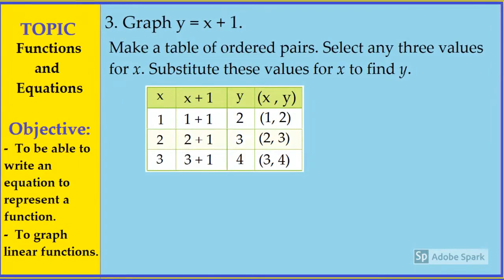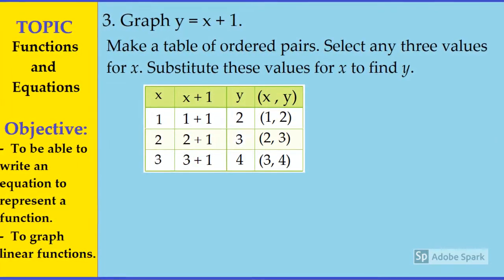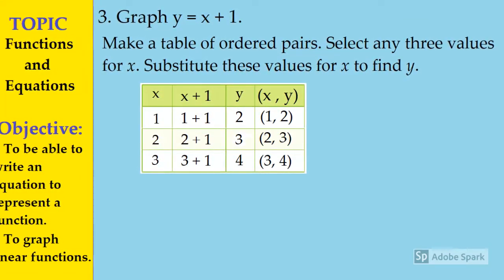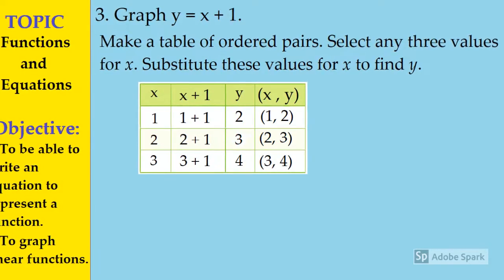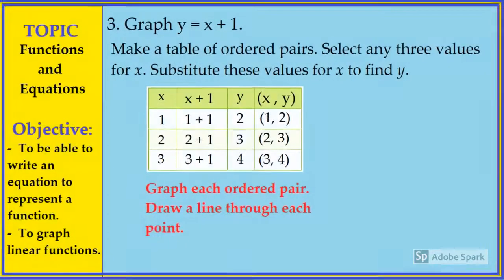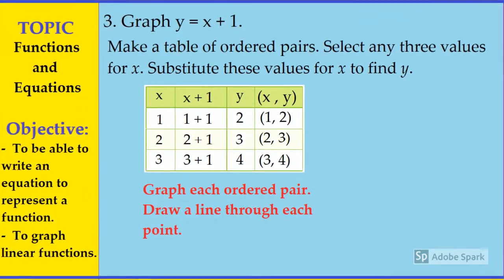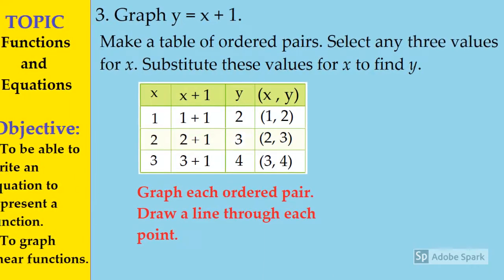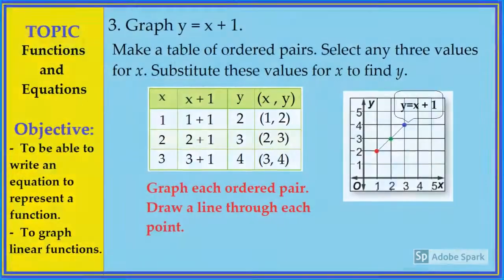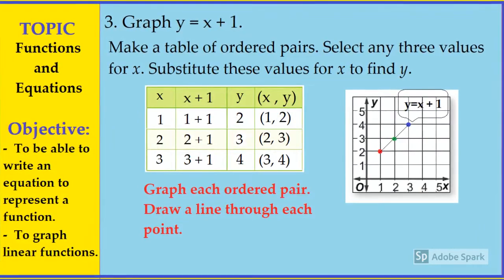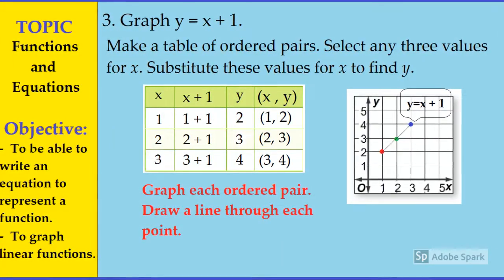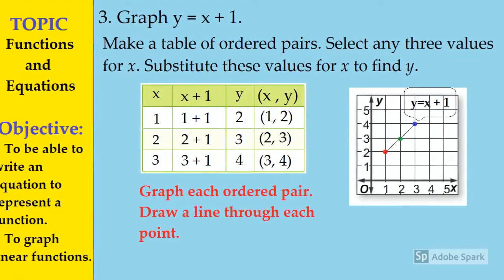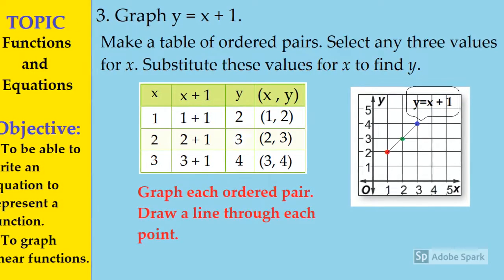Now we can list down the ordered pairs from the xy column: when x is 1, y is 2; when x is 2, y is 3; and when x is 3, y is 4. Next, we are going to graph each ordered pair and draw a line through each point. As you can see from the graph, when x is 1, y is 2; when x is 2, y is 3; and when x is 3, y is 4. This is the graph of y = x + 1.